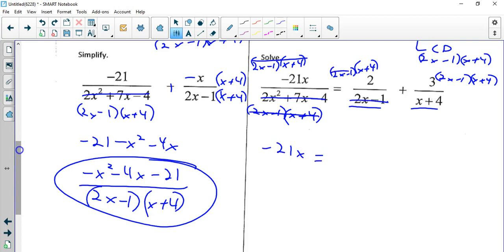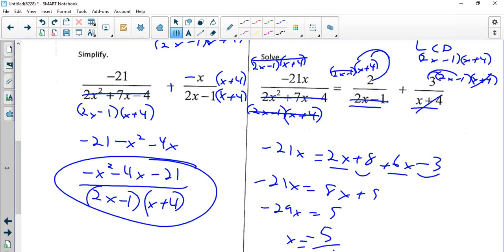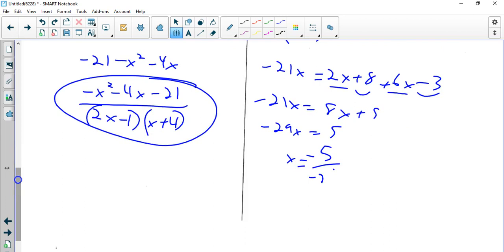Here that cancels, so I'm going to distribute the 2: 2x plus 8. Plus, if the x plus 4 cancels, I'm going to distribute the 3: 6x minus 3. Combine my terms: negative 21x equals 8x, and 8 minus 3 is 5. I'm going to subtract 8x and get negative 29x equals 5. And yes, I can get a negative fraction like this. That equals negative 5 over 29x. It doesn't matter where the negative is. And there's your answer.